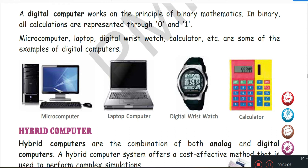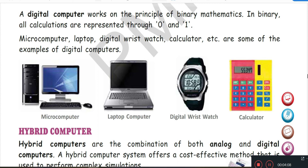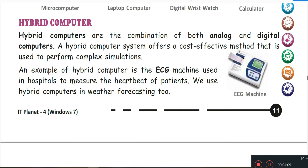Next is Hybrid Computer. What is a hybrid computer? It is a combination of both analog and digital computers. A hybrid computer is made from that combination. Examples include ECG machine and weather forecasting.